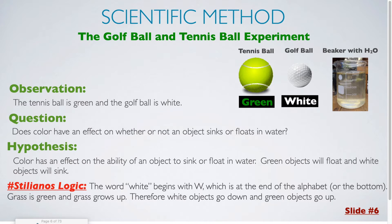My hypothesis is that color does have an effect on the ability of an object to sink or float in water. I believe green objects will float and white objects will sink. Now, my reasoning behind this is that I know the word white begins with the letter W, which is at the end of the alphabet, which is kind of like the bottom. I also know that grass is green and grass grows up towards the sun. Therefore, white objects will go down and green objects will go up.